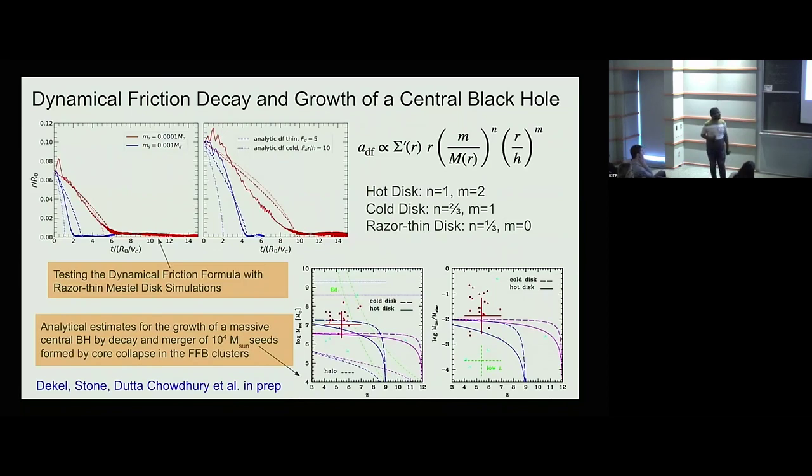One point to note is that dynamical friction in a disk is very efficient. That's because the typical velocities with which the black holes are moving is of order sigma, and the sigma in a disk is small, so therefore dynamical friction is very efficient. If you just look at what would happen due to a dark matter halo, those are the dashed lines there. Dynamical friction from a halo is not sufficient—it's weaker.